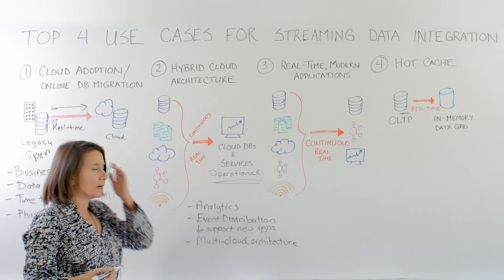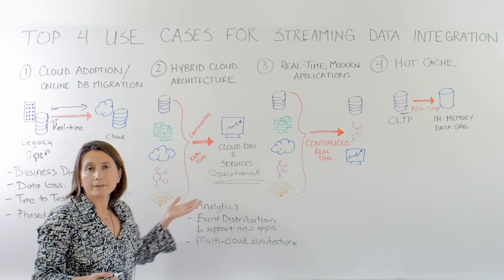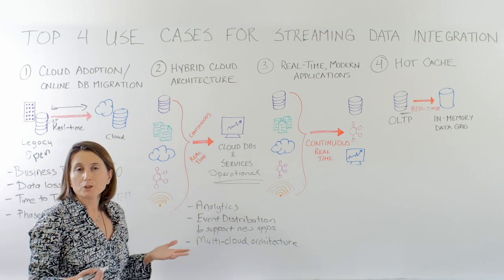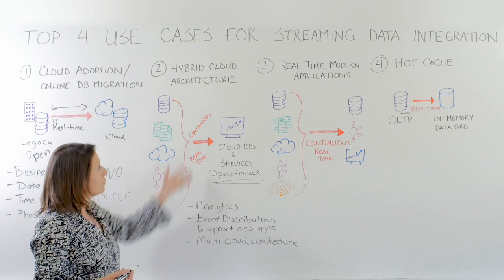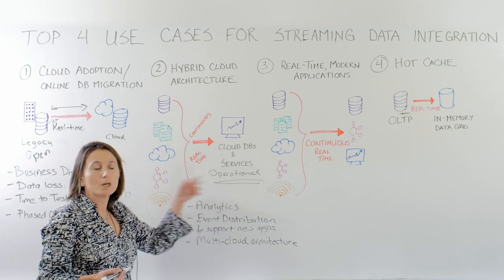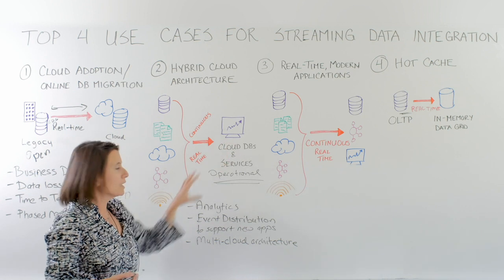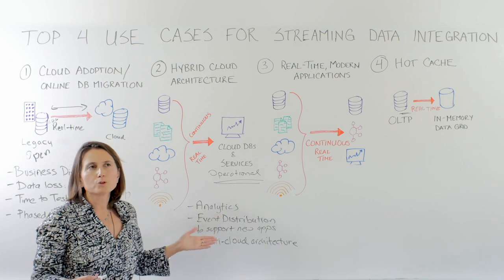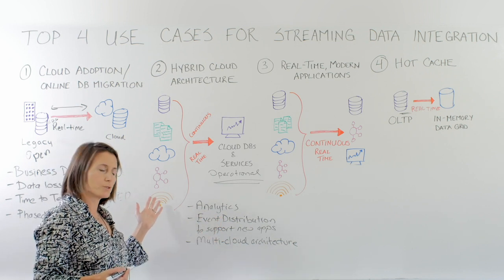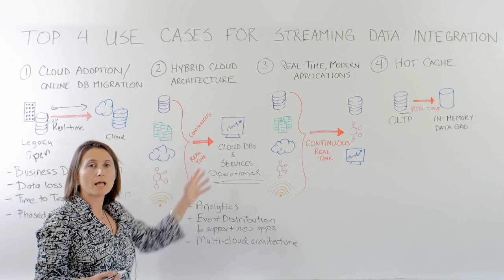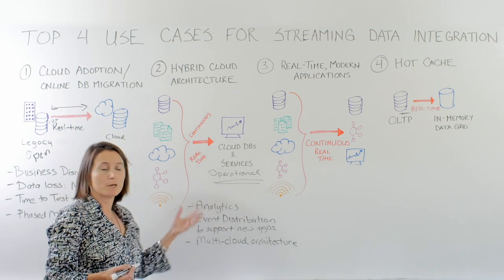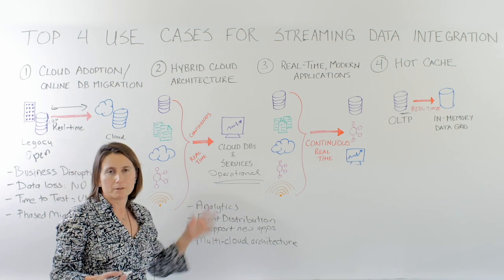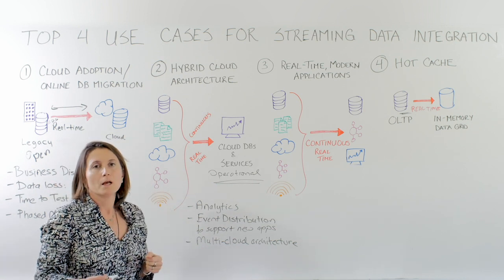In hybrid cloud architectures, we see heavy use of cloud analytics solutions. If you want to run operational reporting, you want comprehensive data delivered continuously so that you can trust it's up to date and have operational intelligence from your analytics solutions. You can also connect your data sources with messaging systems in the cloud to support event distribution for new apps running in the cloud, so they are completely part of your data center.